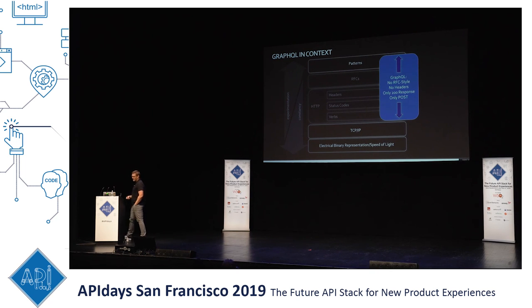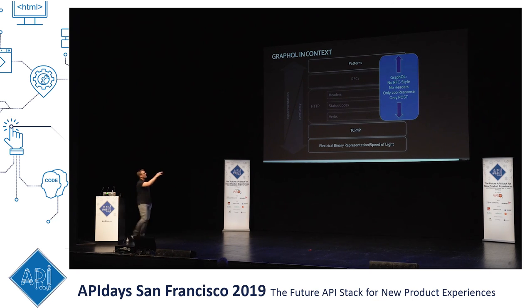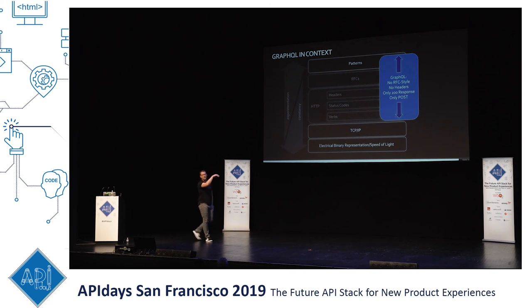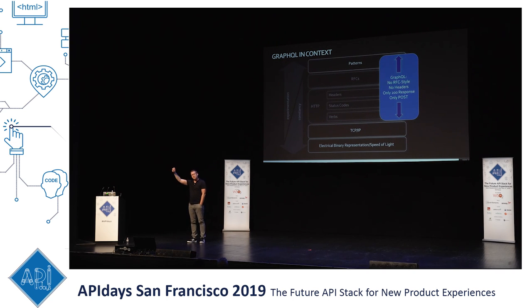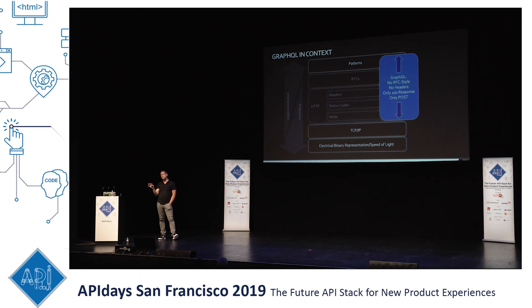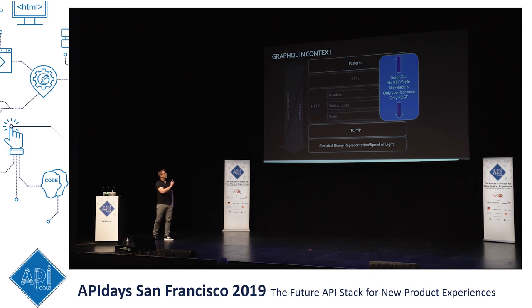I can hear some of the thought processes right now: Matthew, doesn't GraphQL represent an abstraction of complexity rather than having to think about which verb to use, which status code, which header? Isn't this an abstraction that frees the developer from having to think about that complexity? Well, we have to remember that complexity is neither created nor destroyed — it only moves around and changes shape. So in this particular situation, yes, I don't have to think about which verb and which status code and which header to use.